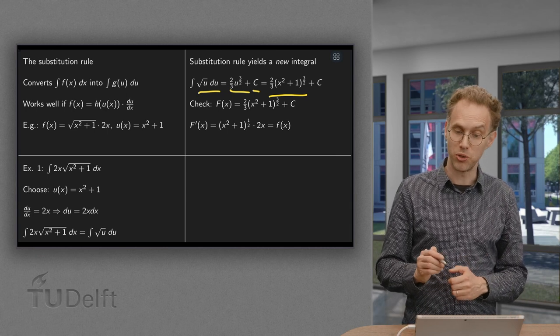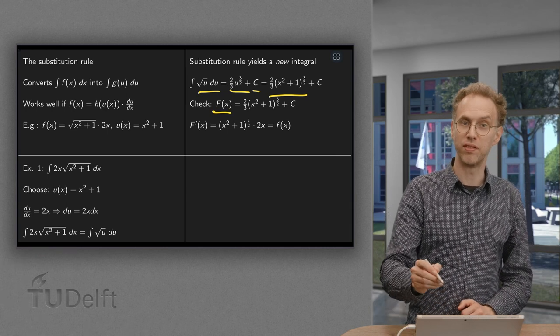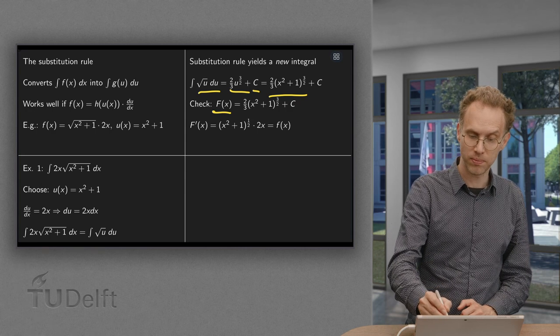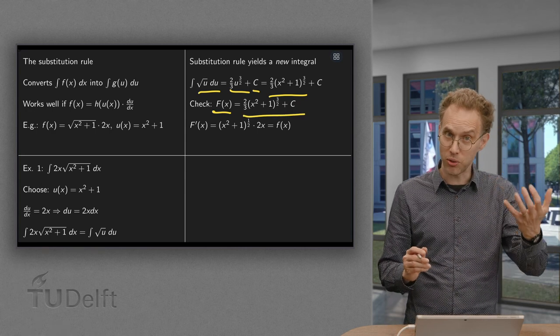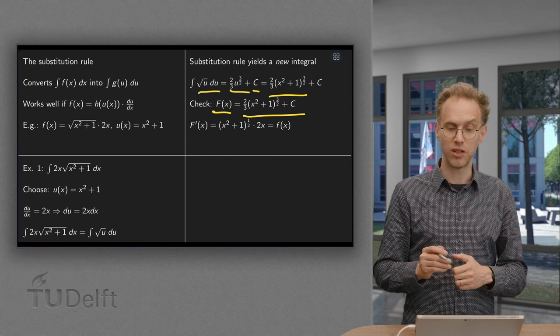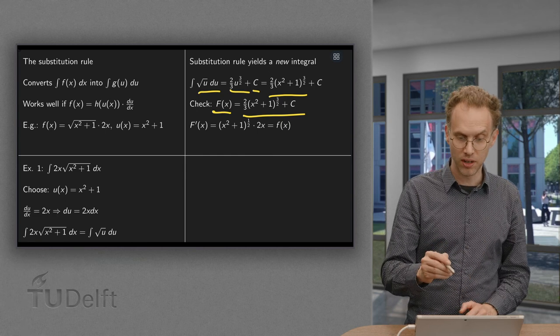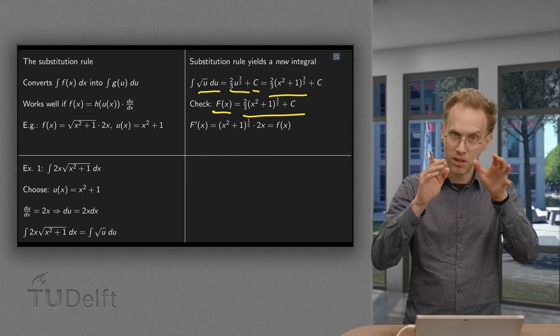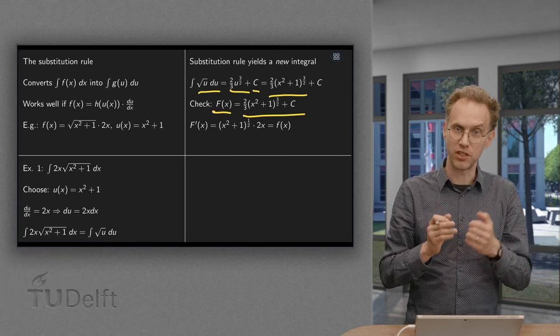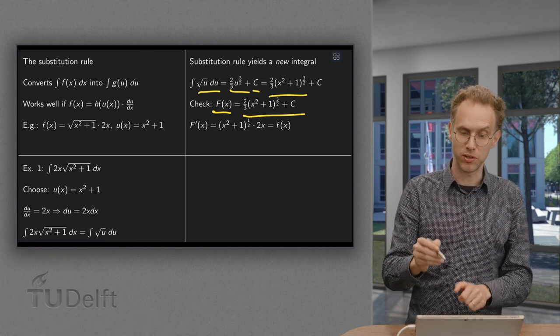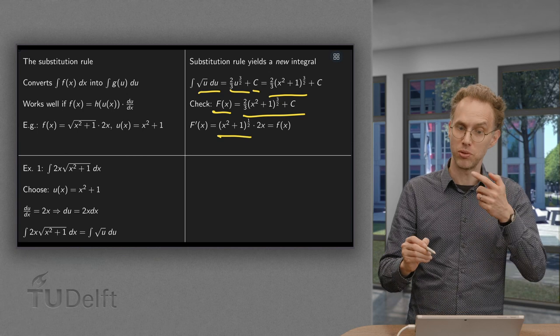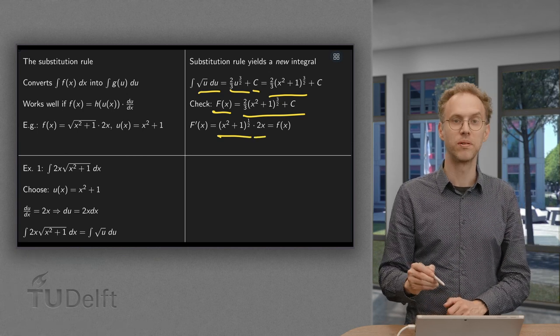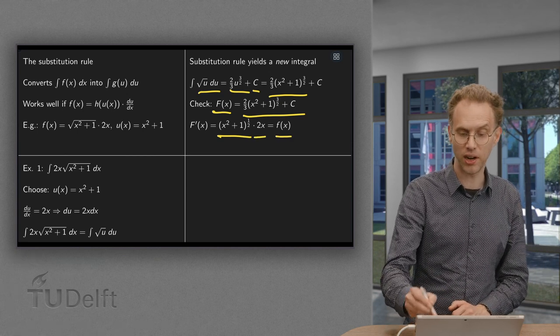Always good of course to check. If here you have your antiderivative, capital F of x, you can check whether it's correct by differentiating it. So if we differentiate, we get 2/3 times 3/2, which we cancel out, times x squared plus 1 to the power 1/2, times using the chain rule 2x, which is indeed our f(x).